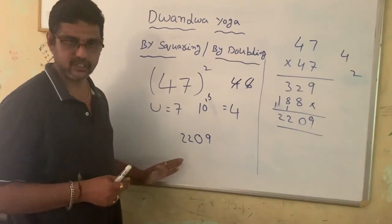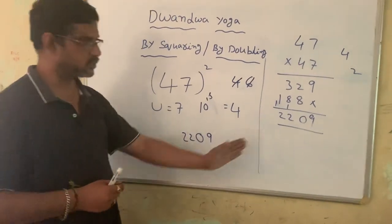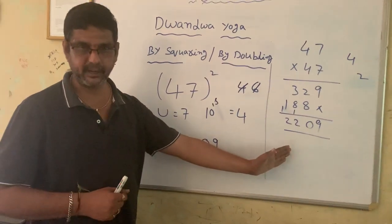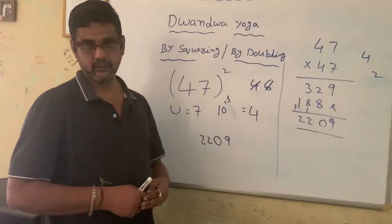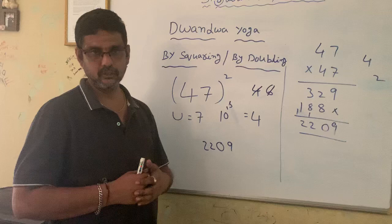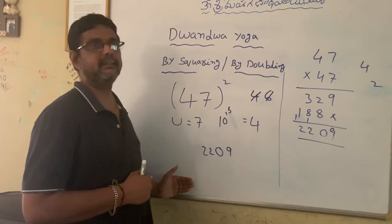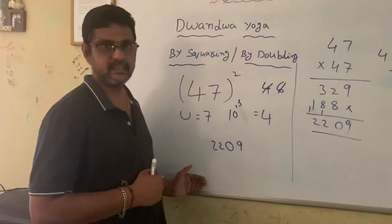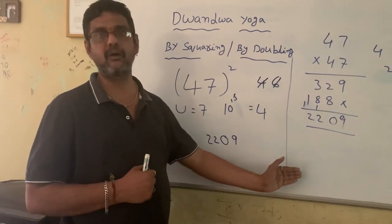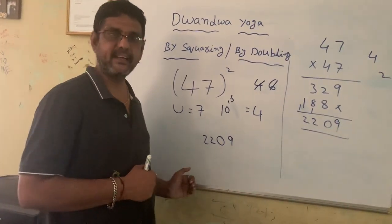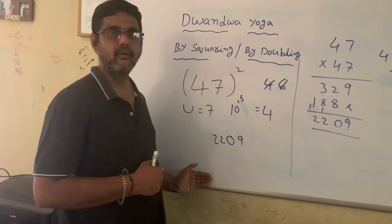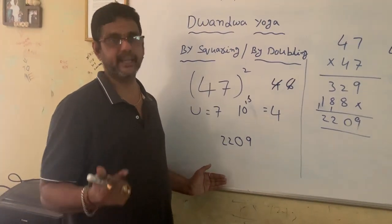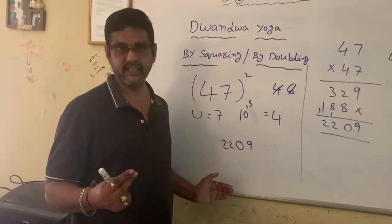And here you can see the answer is 2209, which is equal to what we got by traditional method. Same answer. So children, the Vedic method is very easier than the traditional method what we are doing till now. So practice this one and you will get squaring within seconds.